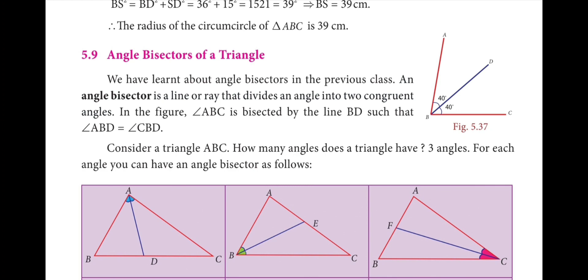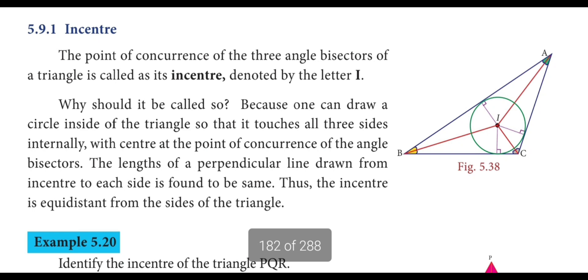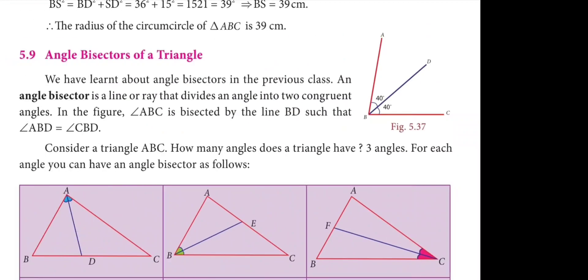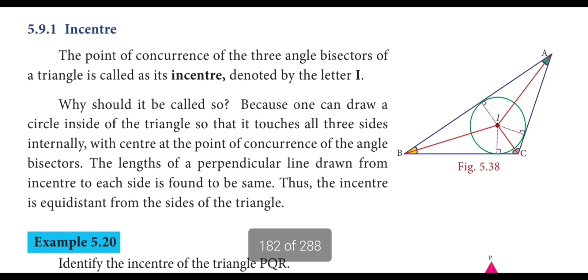Angle bisector: while a perpendicular bisector cuts a line into two equal parts, an angle bisector cuts an angle into two equal parts — for example, an 80-degree angle is split into 40 + 40 degrees. Incenter: the point of concurrence of the three angle bisectors is called the incenter, and the inscribed circle sits inside the triangle.